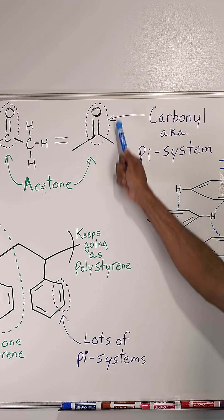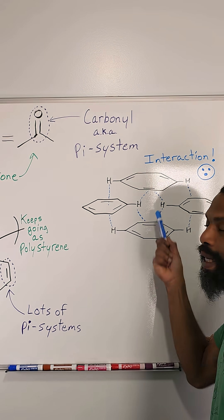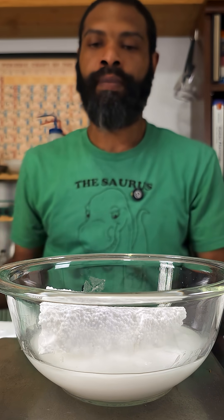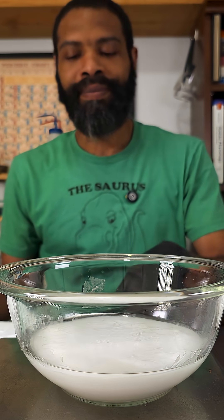But acetone, having this pi system in it, can probably slide in between these rings. And once it does that, they can't interact with each other anymore. That creates the gap that the air slides through as the strands detangle and slide past each other in the acetone.